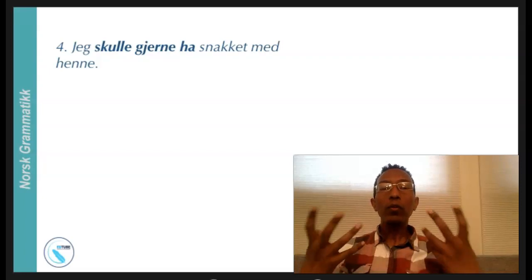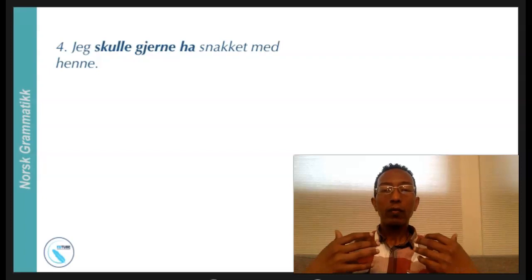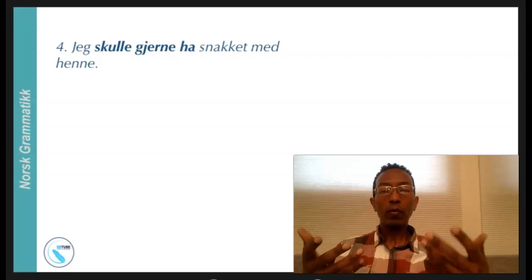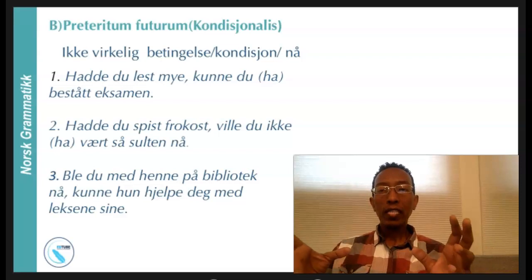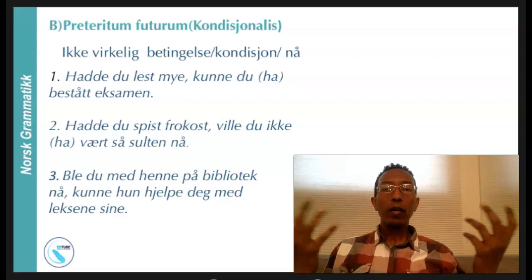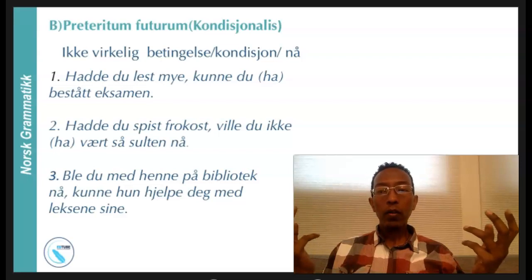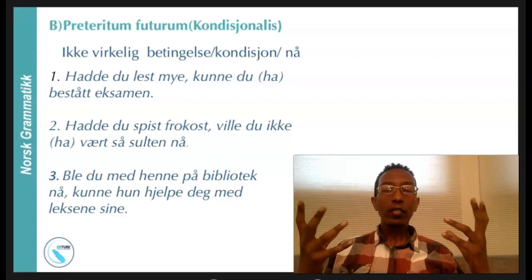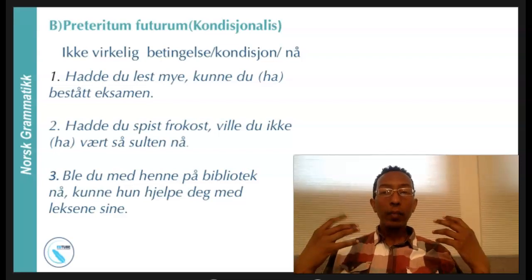The fourth usage is also with 'skulle' — preteritum future perfect — to indicate politeness, as a polite way of expressing something to someone. The other usage is in a conditional way — when things are not certain or not real, like imagining: 'If I were a bird I could fly.' In Norwegian: 'Hadde de lest, ville de ha bestått eksamen' — if they had read, they could have passed the exam. 'Hadde du vært med henne, ville hun ha hjulpet deg' — if you were with her, she would help you. These are if-conditions, like in English, used for unreal or hypothetical situations.